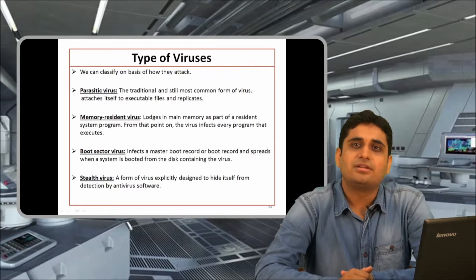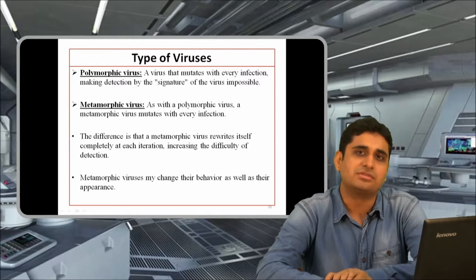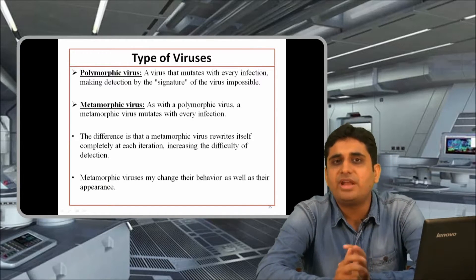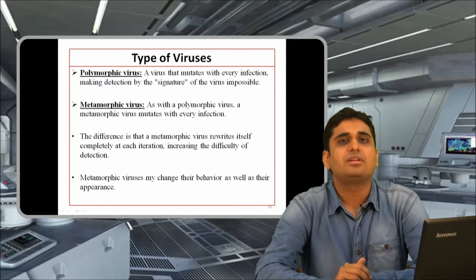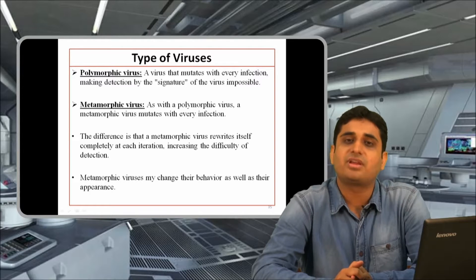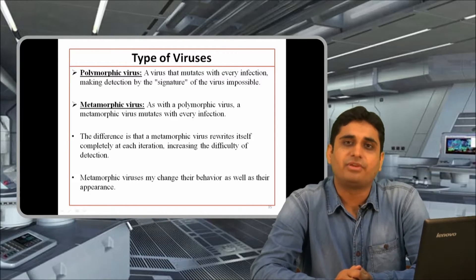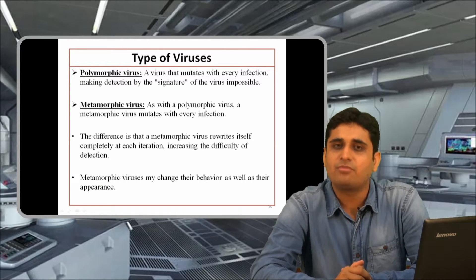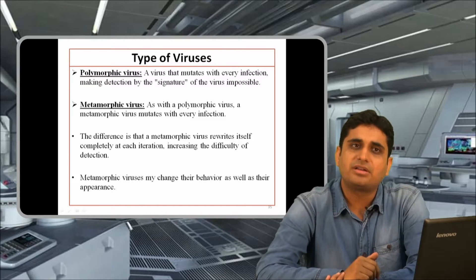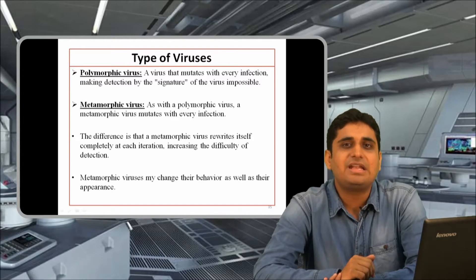There is also the polymorphic virus. Every time the virus runs, it changes its signature and keeps mutating with the system settings. If one pattern is recognized by an antivirus, next time it will not be. Then there is the metamorphic virus, which is similar to polymorphic, but each time it changes form, it also increases its strength so that an antivirus program cannot detect it.